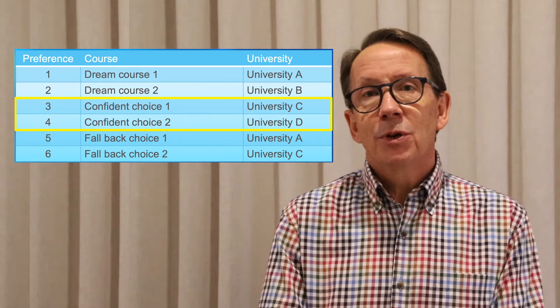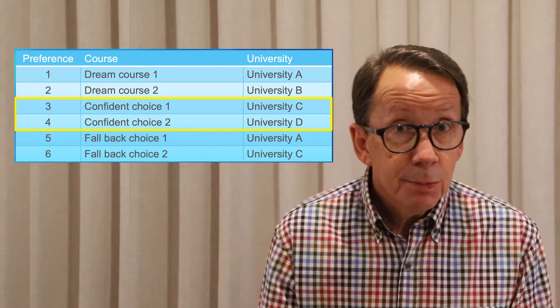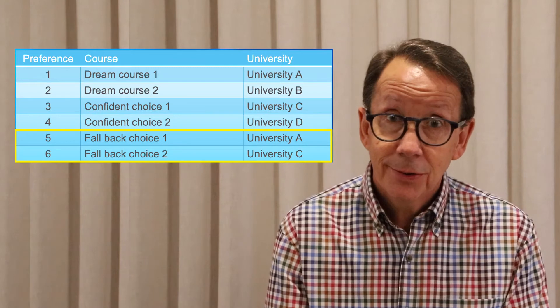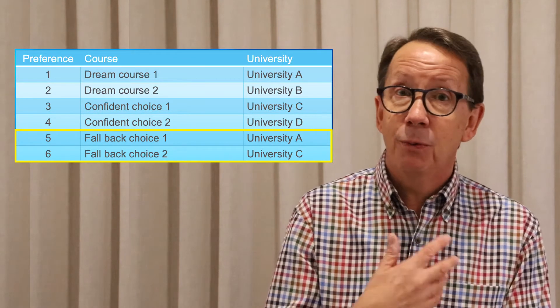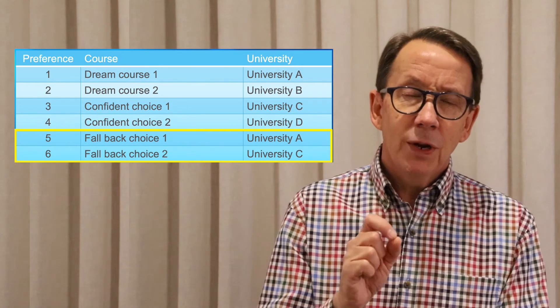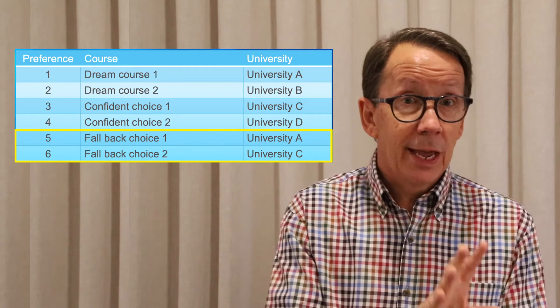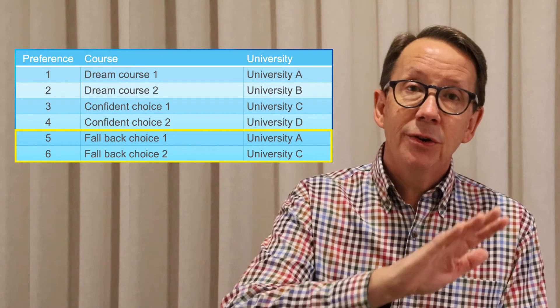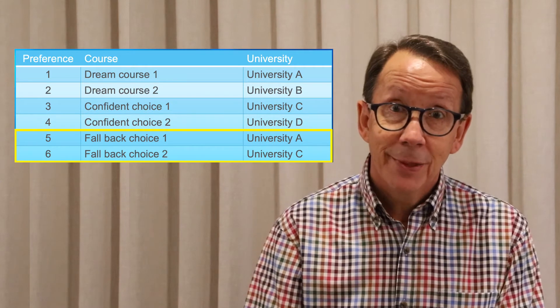It's also a good idea to have a Plan B, particularly if you're aiming for a course that's really hard to get into with very few places and is highly competitive. Think about another course at the same university or a different university that's a bit easier to get into, that you can use as a stepping stone to where you want to get later on. Universities can give you really good advice about this, and having a Plan B means you've got all your bases covered whether things turn out better or not as good as you hoped.